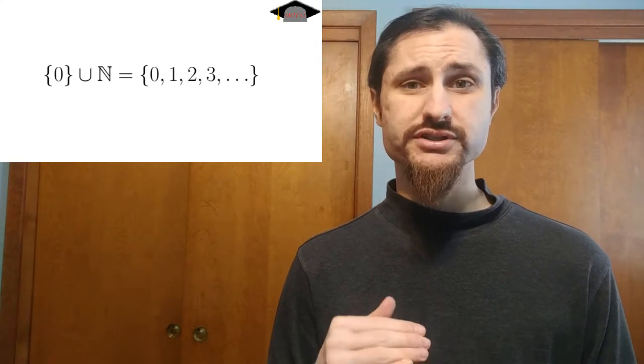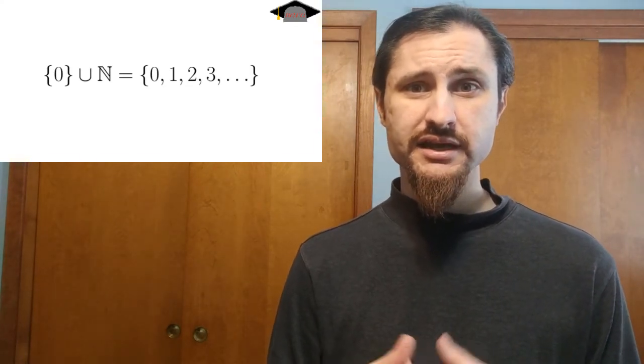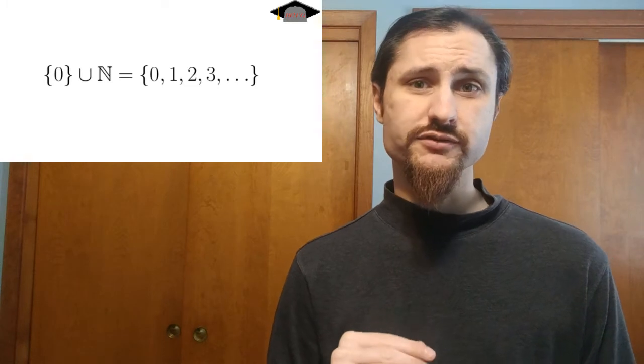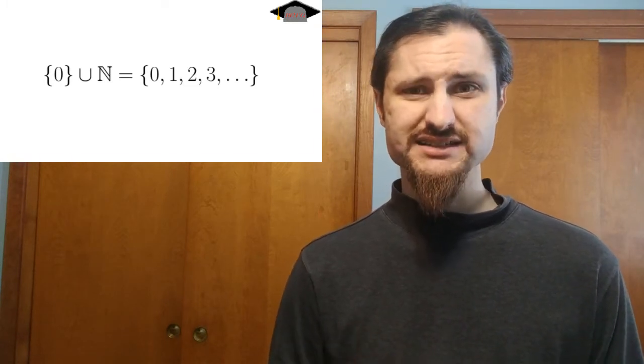So after they invented those numbers, early humans would have sought to invent the number zero. Because it's important to describe the lack of something, and it's also good to have a zero to act as a placeholder. Otherwise, it's kind of difficult to represent a number like 106. Also, mathematically speaking, it's good to have zero because it serves as an additive identity. It's good to have a number that if you add it to any other number, the value doesn't change.